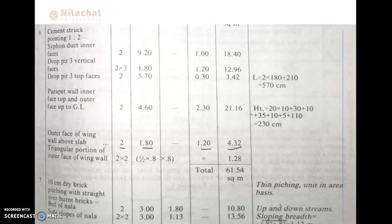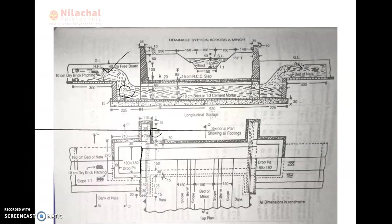Then we go through the dry brick pitching with straight over ground, which is item number 7 — 10 centimeter thick dry brick pitching. First of all, we need to check where the dry brick pitching is provided. The dry brick pitching is provided here — 10 centimeter dry brick is provided in the case of the bed of nada. We need to check what is the cross section of the bed of nada.